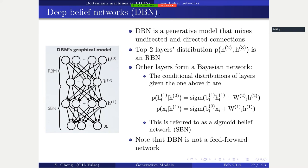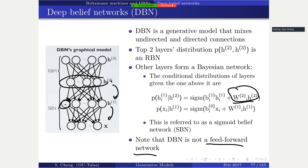The DBN is not a feed-forward network - be careful. Even though it looks like feed-forward, it just specifies conditional probabilities. Given the probability, you need sampling - it doesn't directly output h2 times W. It specifies the probability for you, and you use sampling to decide the actual values. The RBM layer is definitely not a feed-forward network.